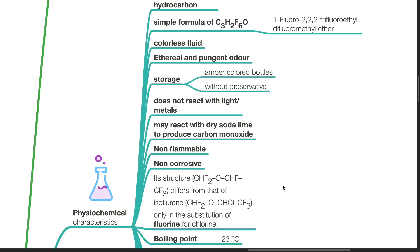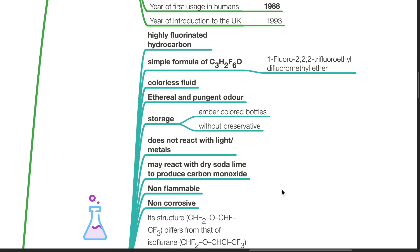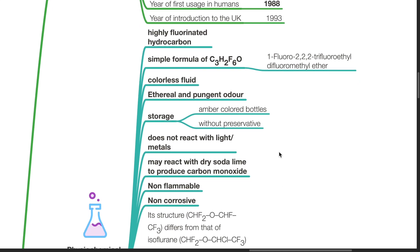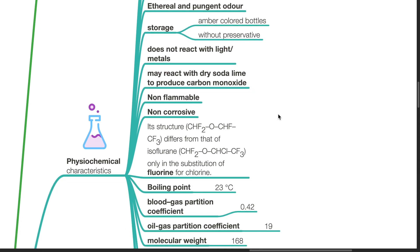Physical Chemical Characteristics. Desflurane is a highly fluorinated hydrocarbon with a simple formula of C3H2F6O, also known as 1-fluoro-2,2,2-trifluoroethyl difluoromethyl ether. It is a colourless fluid with an ethereal and pungent odour. It is stored in amber coloured bottles without preservative. It does not react with light or metals. It may react with dry soda lime to produce carbon monoxide. Desflurane is non-flammable and non-corrosive. Its structure differs from that of isoflurane only in the substitution of fluorine for chlorine.